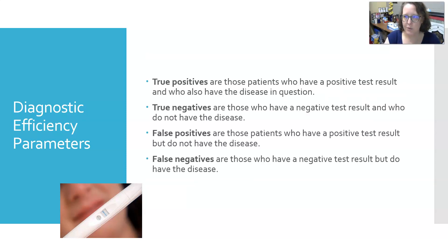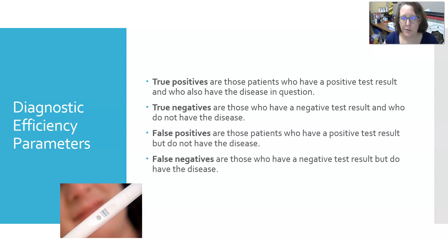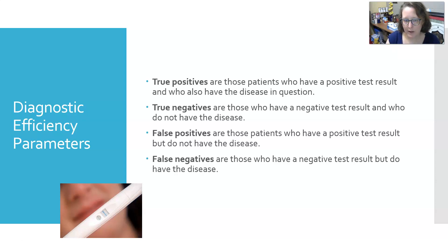When we do studies, we test people who have the disease and those who don't against the test to see the results we get, and then we qualify these results as true positives, true negatives, false positives, and false negatives. True positives are patients who have a positive test result and also have the disease. True negatives are those who have a negative test result and do not have the disease. False positives are patients who have a positive test result but do not have the disease. False negatives are those who have a negative test result but do have the disease.